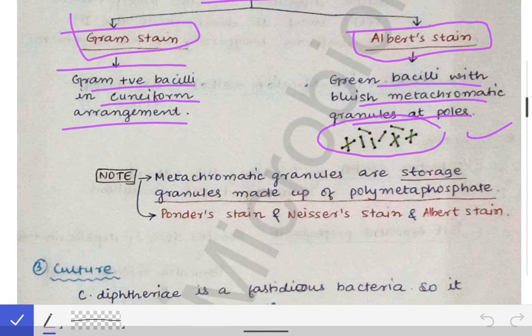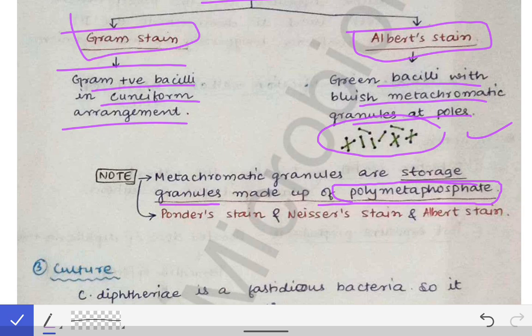The metachromatic granules are storage granules made up of polymetaphosphates — this may be asked in MCQs. There are different stains by which you can visualize these metachromatic granules. The three most important stains asked in exams are Ponder's stain, Loeffler's stain, and Albert stain, by which you can visualize those metachromatic granules.